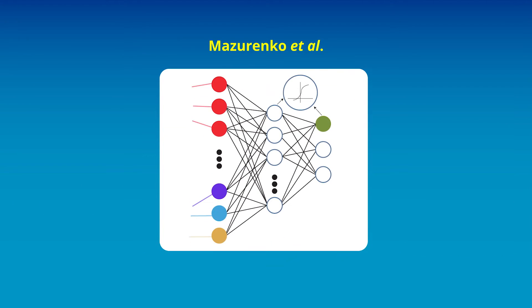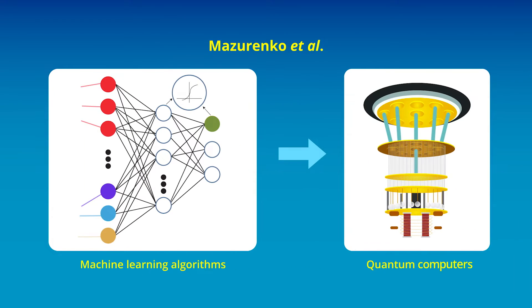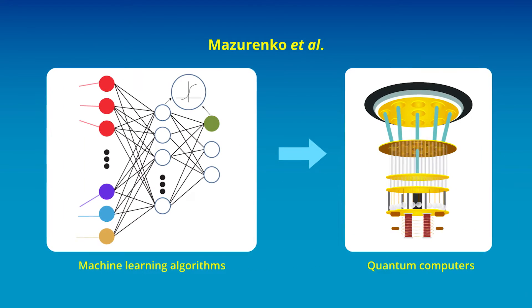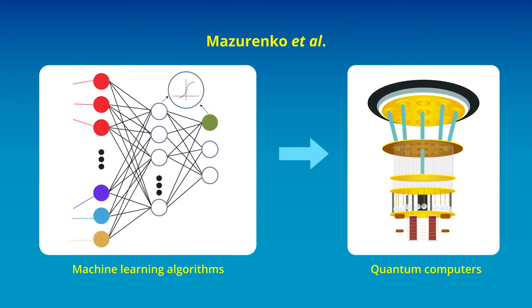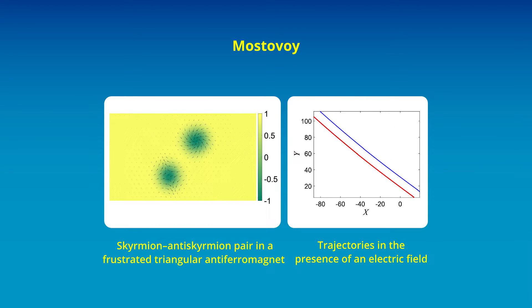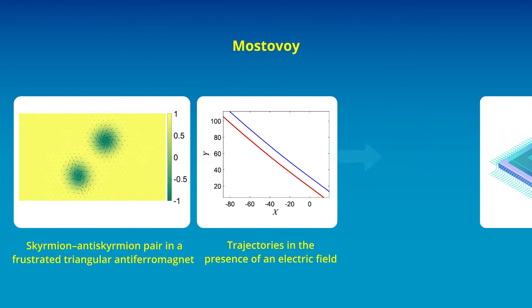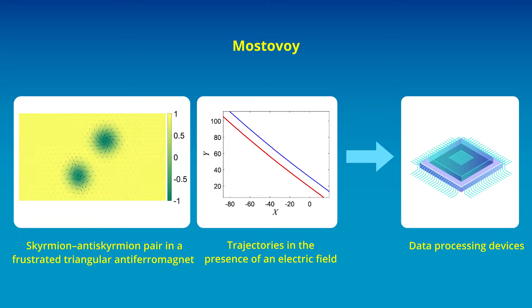Matsarenko et al. offer insights into machine learning algorithms for characterizing magnetic skyrmions that originate from DMI, potentially benefiting near-term quantum computers. Mostovoy discusses methods to manipulate magnetic topological defects, which may be useful for developing low-energy consumption memory and data processing devices.